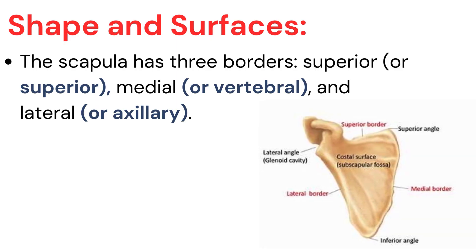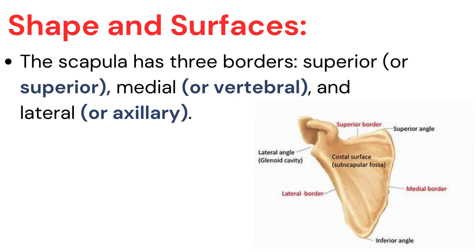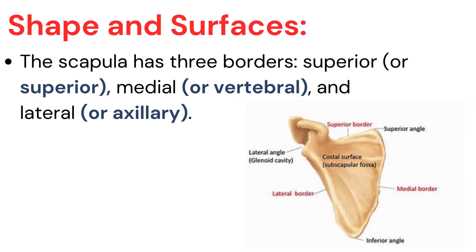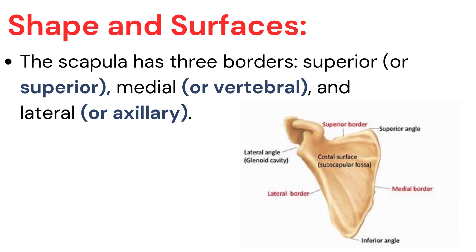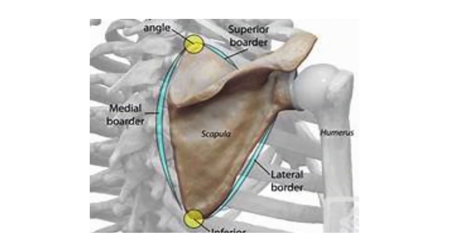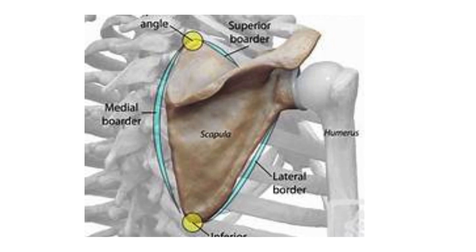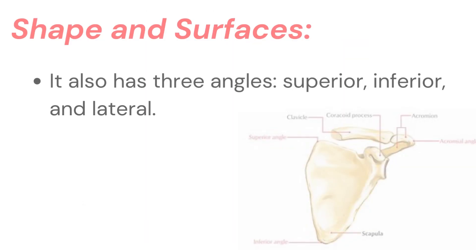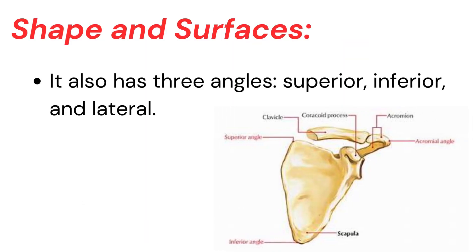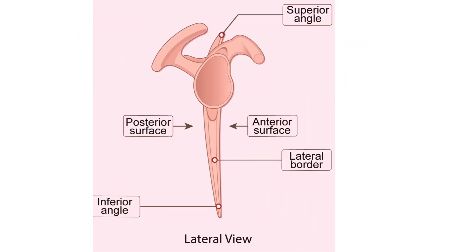Shape and surfaces. The scapula has three borders: superior, medial or vertebral, and lateral or axillary. It also has three angles: superior, inferior, and lateral.